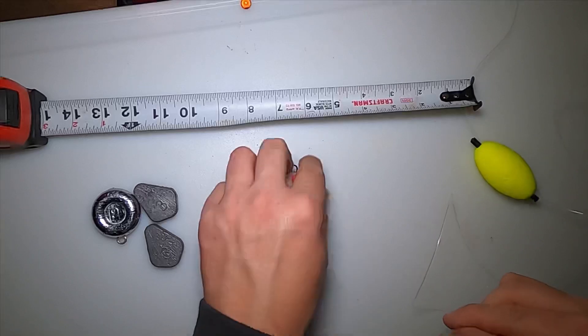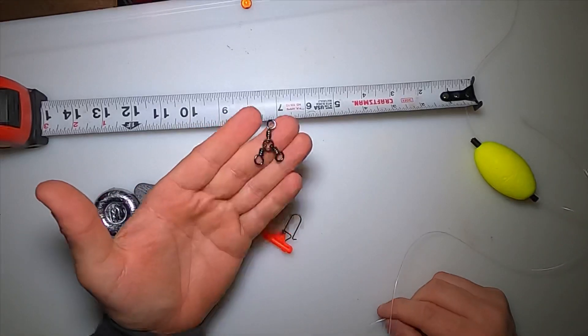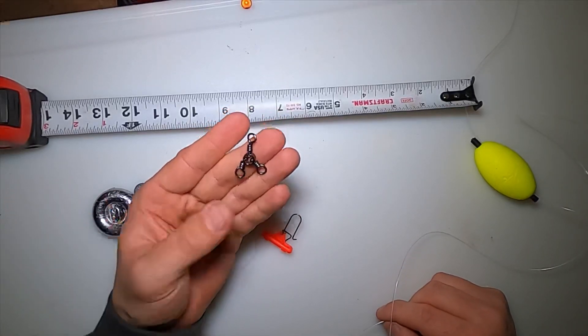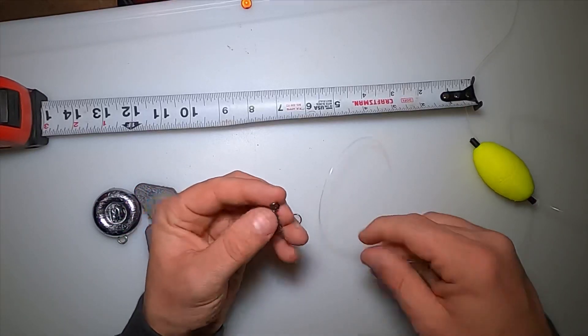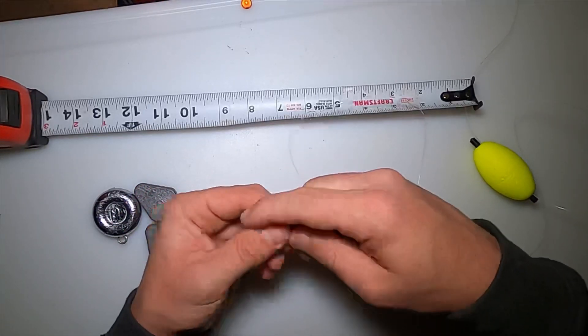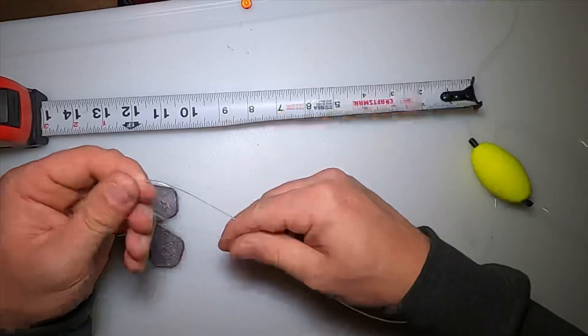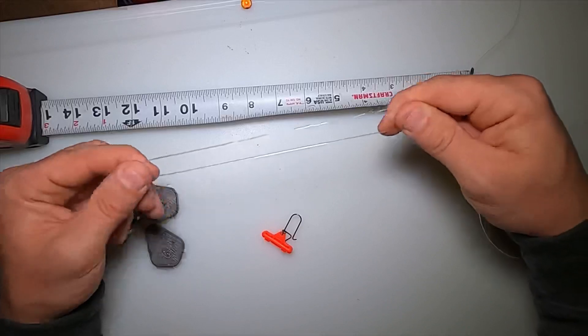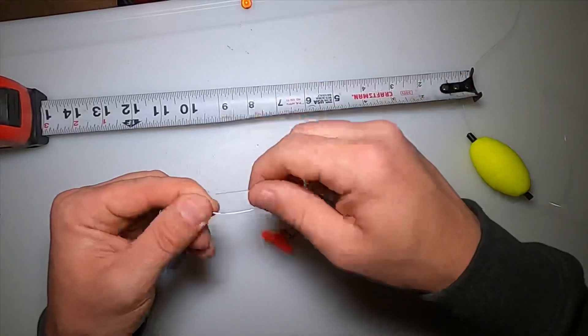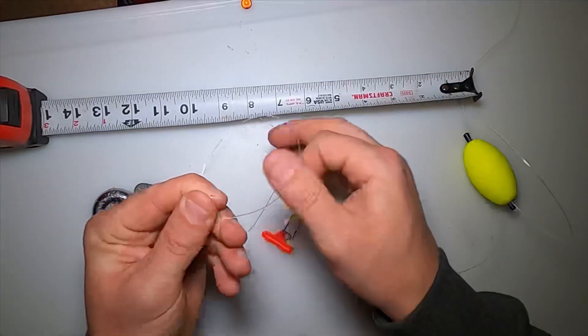Then I use a 110-pound three-way swivel. You can buy these just about anywhere. I don't really have a particular brand I buy, but I'll run it through and give it about eight inches. I hold my fingers right there and wrap it around about seven times.